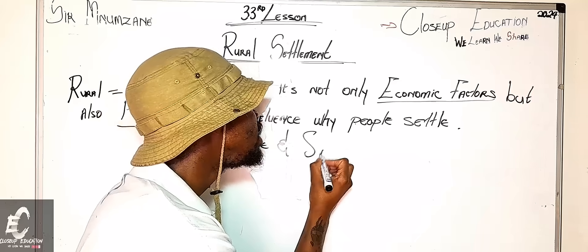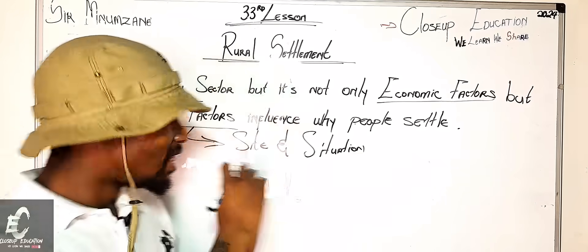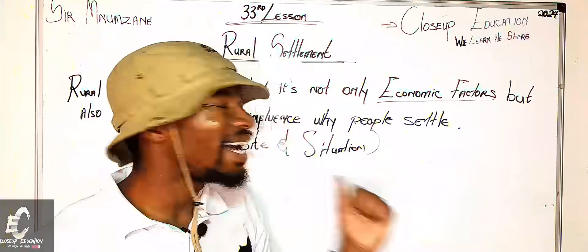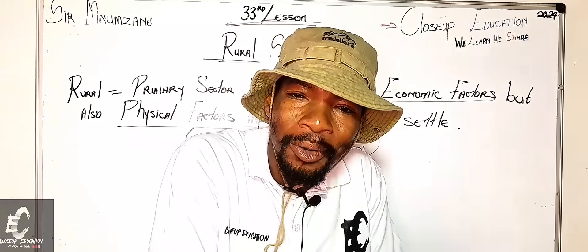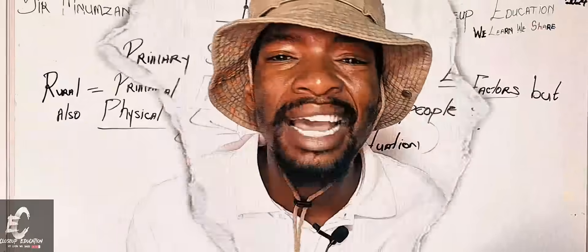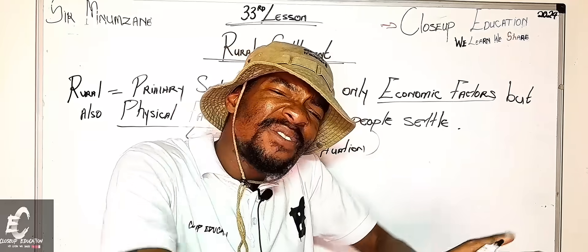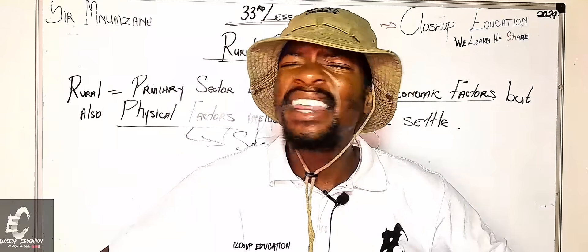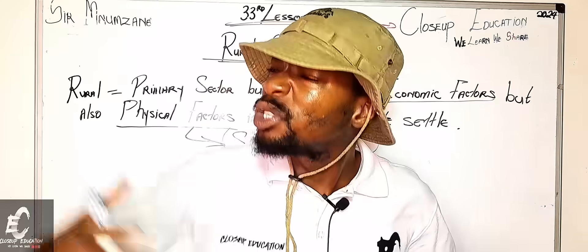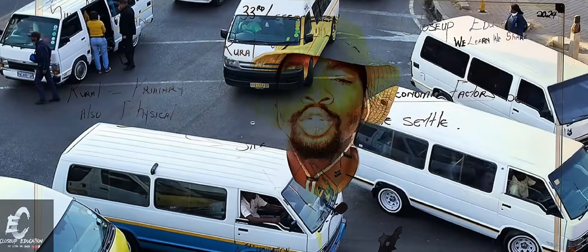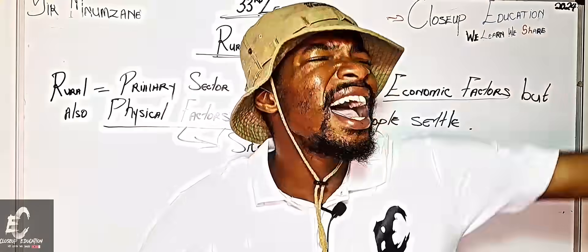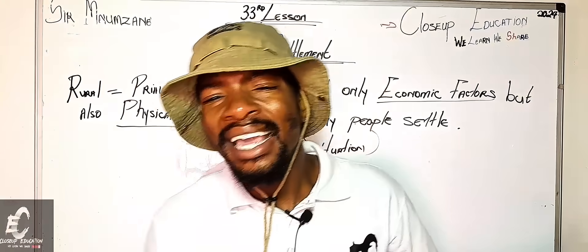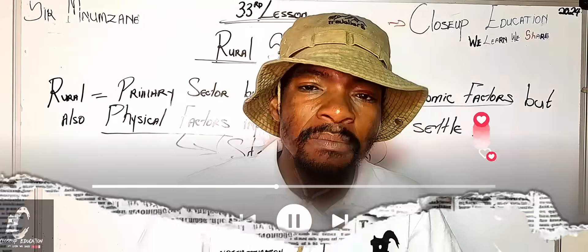This is where we touch on the site and the situation of a settlement. A site is an exact location and its physical features. The situation speaks about the settlement and its accessibility — is it easy to access other settlements from where you are currently settling? Is there accessibility to and from your settlement? That is situation.